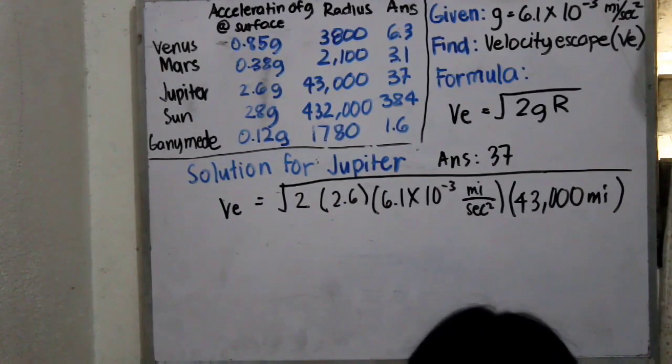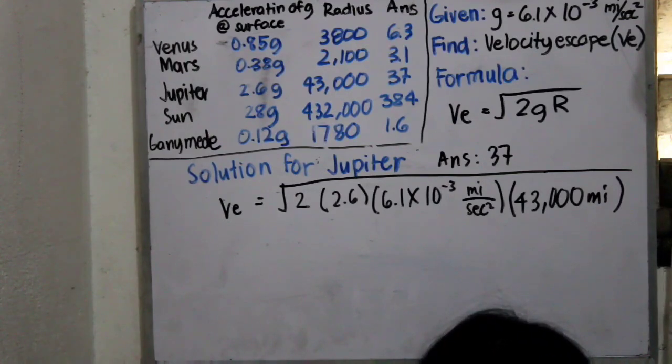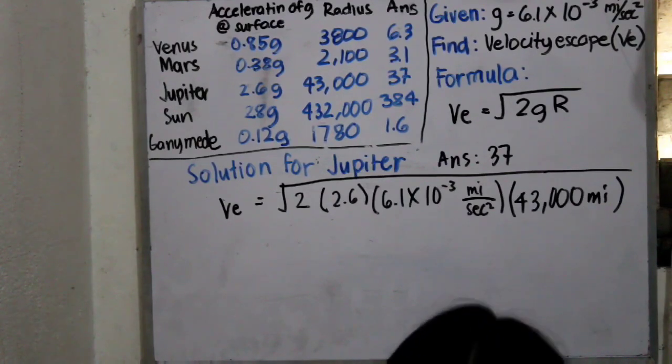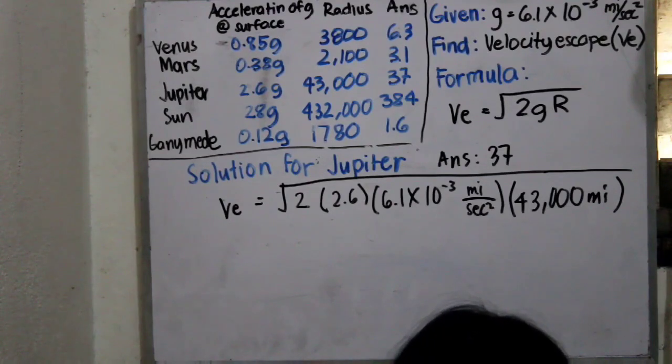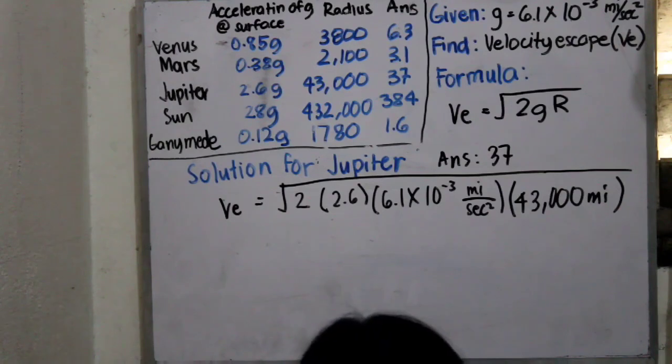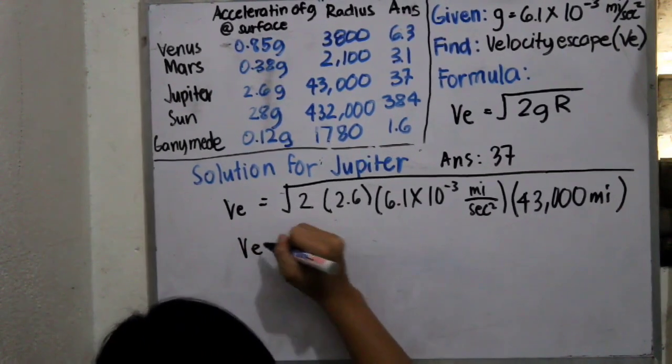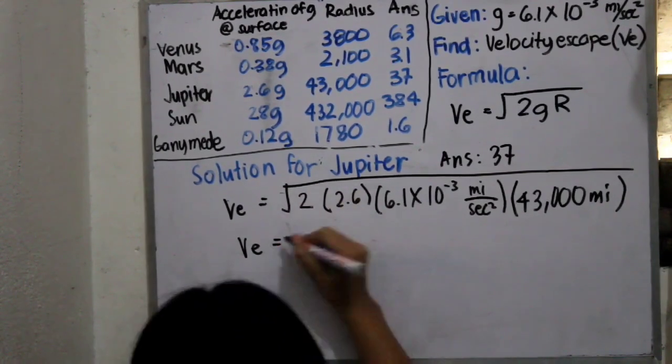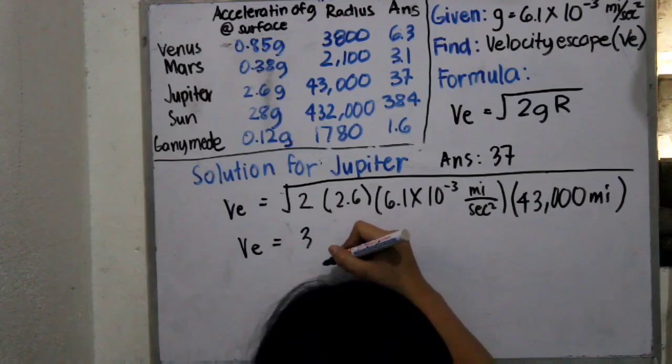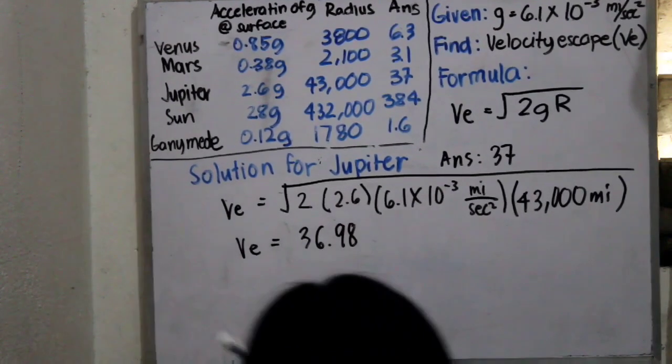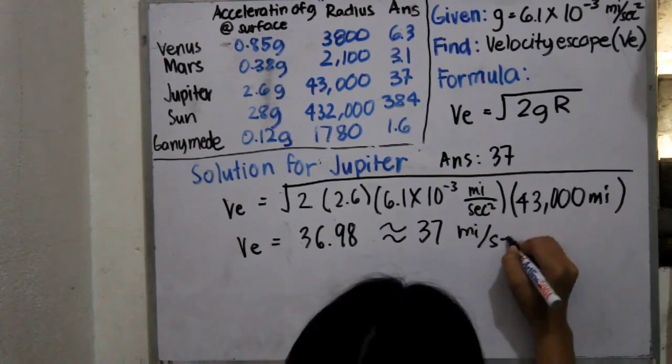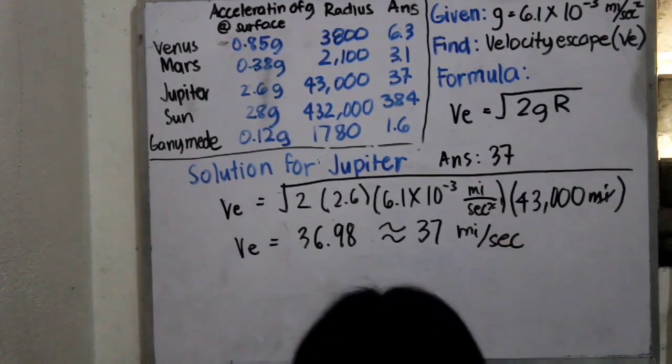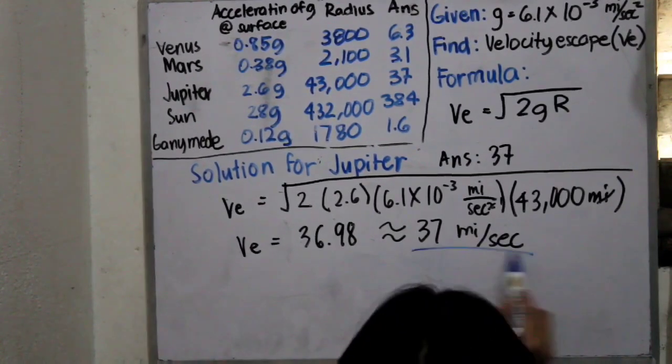Using calculator, we have to plug in our given, and we can now arrive in our answers. VE is equals to 36.98. So, approximately 37 because it's rounded off miles per second. Same as before, that is our final answer.